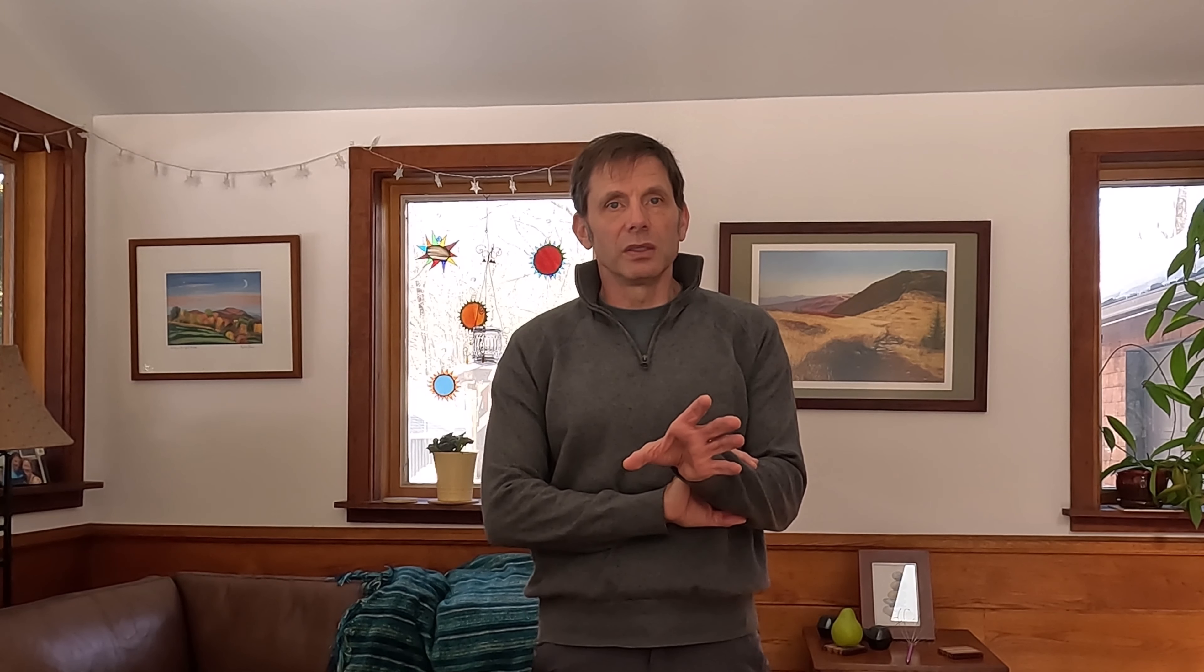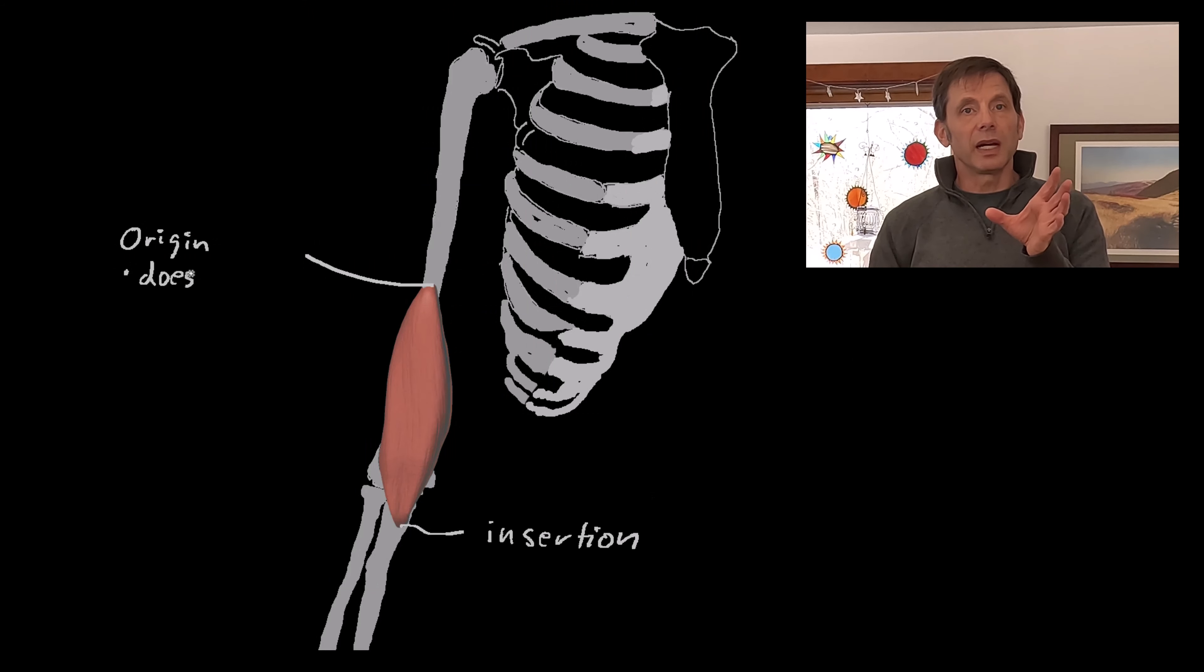Skeletal muscle is under voluntary control. If I want to eat this pear, I control skeletal muscle to move it the way I want to.